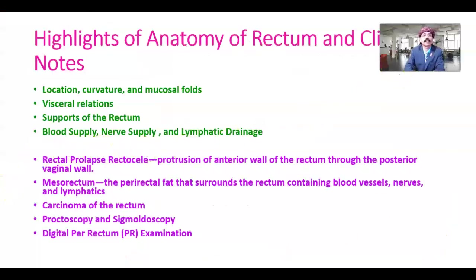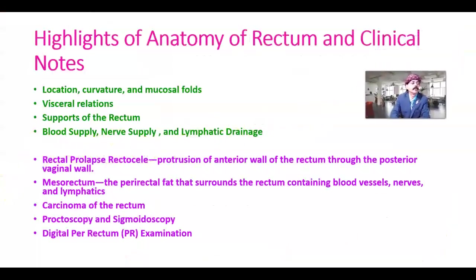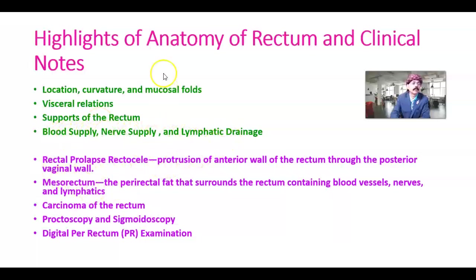Highlights of the anatomy of the rectum: we have covered location, curvature and mucosal folds, visceral relationships (anterior and posterior, male and female), supports of the rectum (important — otherwise the rectum will prolapse), blood supply, nerve supply, and lymphatic drainage, as well as rectal prolapse discussed in the previous slides.